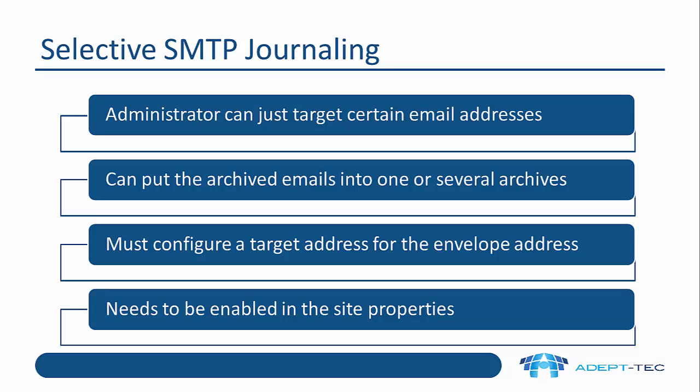The first option is selective SMTP journaling. Here the administrator can target just certain email addresses, and those archived emails can be placed into one or several archives. A use case would be having 10 users in the sales department and putting all archived emails into one sales archive. It's very important to understand that you must still configure a target address for the envelope address — the address that the journaled emails are being sent to out of Exchange — even though you don't configure it for archiving. The demo will show how this works.